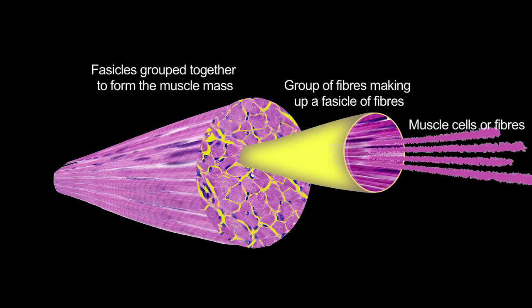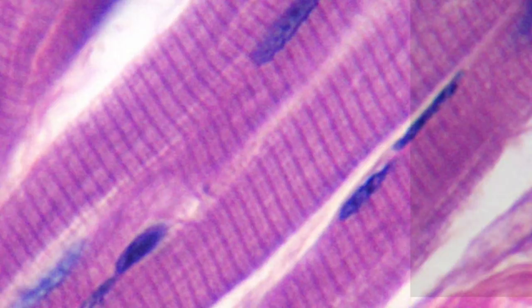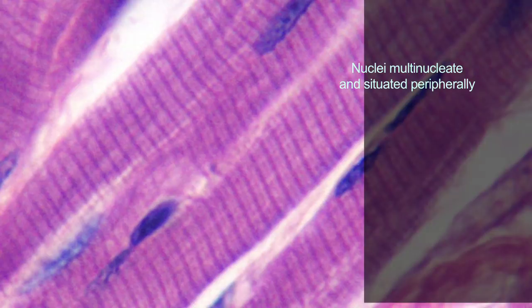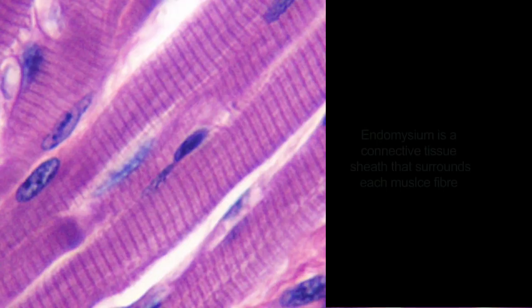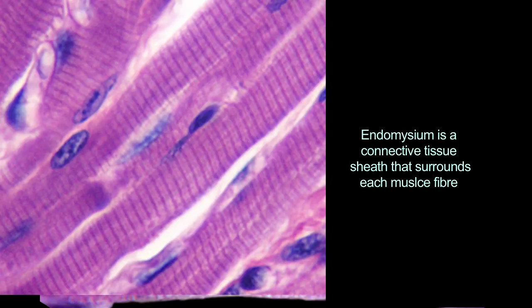This is a transverse section of a mammal tongue to demonstrate skeletal muscle. First, we will examine the longitudinal section of muscle fibres. Skeletal muscle is multi-nucleated, that is, there are more than one nucleus per muscle cell. These nuclei are elongated and arranged peripherally along the muscle fibre. Each muscle fibre is enclosed in an endomysium, which is a connective tissue sheath.